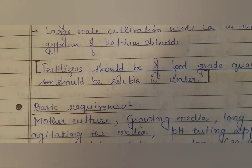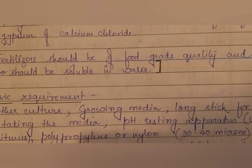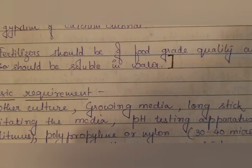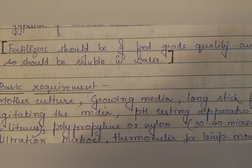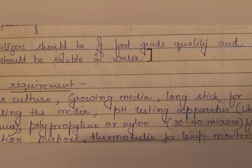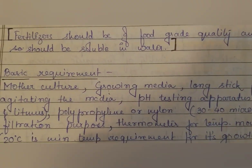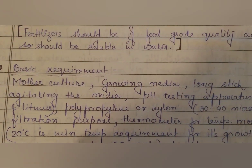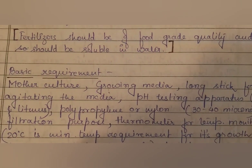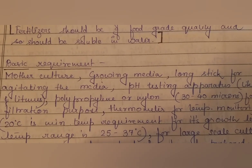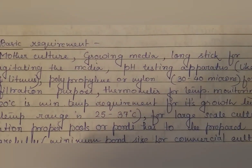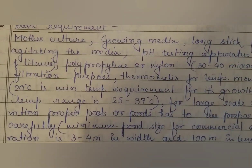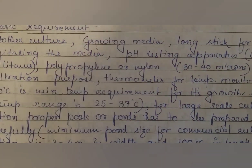Basic requirements for spirulina cultivation include the mother culture, growing media, a long stick for agitating the media, pH testing apparatus like litmus paper, polypropylene or nylon of 30 to 40 micron grade for filtration, and a thermometer for temperature monitoring. The minimum temperature requirement is 20°C, though the optimal range is 25 to 37°C. For large-scale cultivation, proper pools or ponds must be prepared; the minimum pond size for commercial cultivation is 3 to 4 meters in width and 100 meters in length.